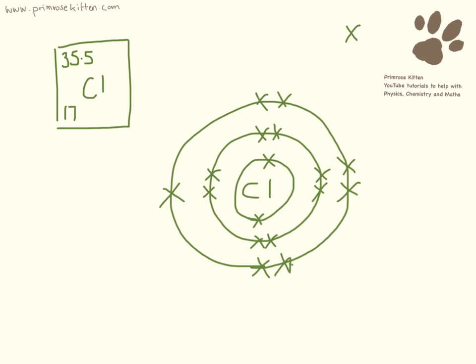This is chlorine. It has 17 protons and 17 electrons in the atom.